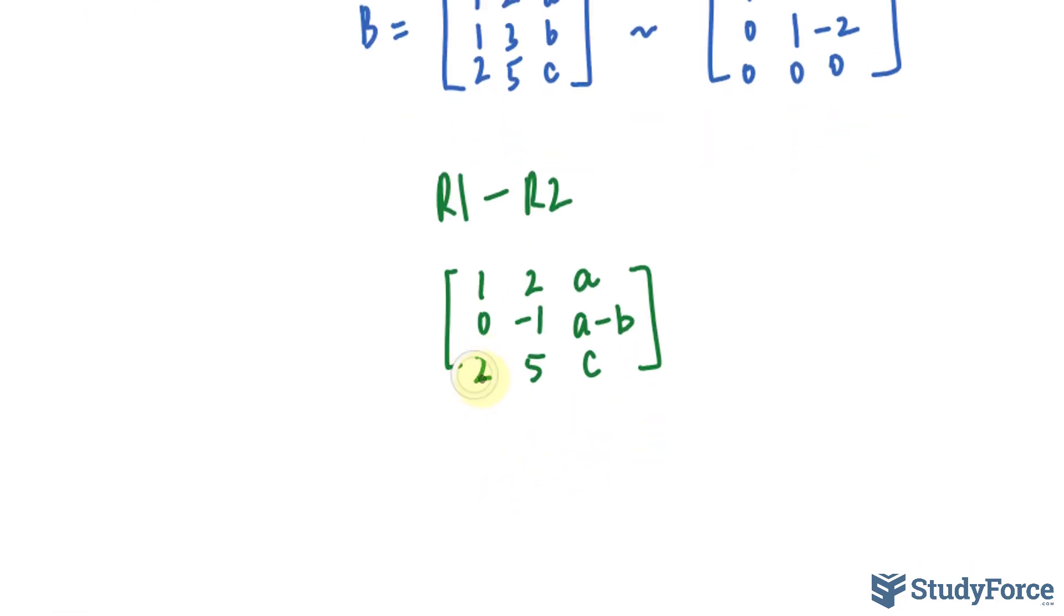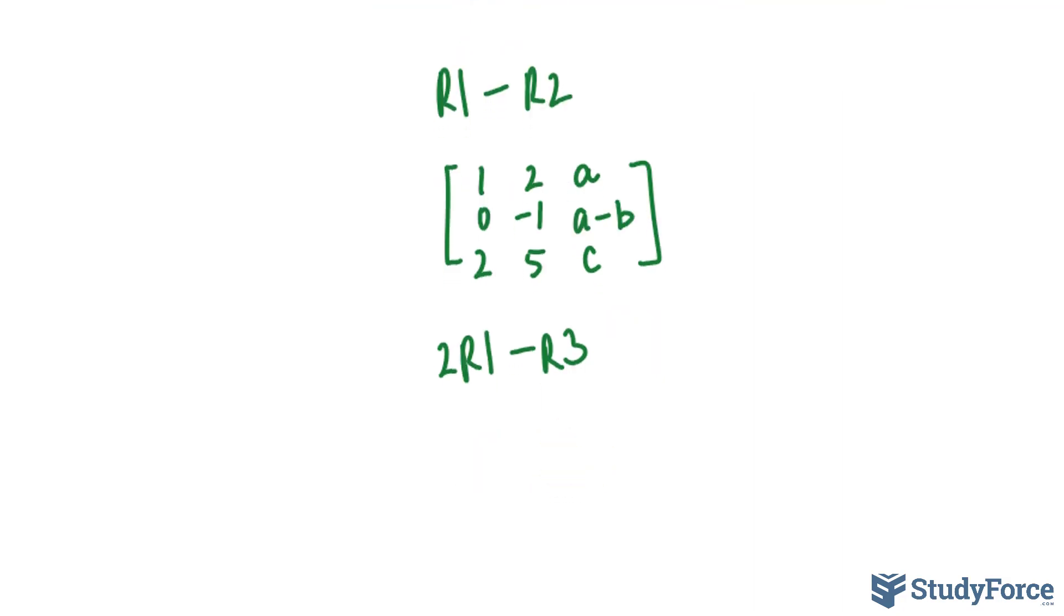Now I want to make this 2 into a 0. So I'll multiply row 1 by 2 and subtract row 3. Here's how that works. First and foremost, row 1 and row 2 are left unchanged, so I'll rewrite them. And now our new row 3 will be 2 times 1 minus 2 is 0. 2 times 2 minus 5 is -1. 2 times A minus C is 2A minus C.